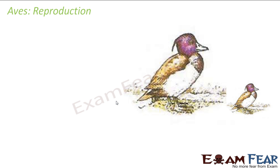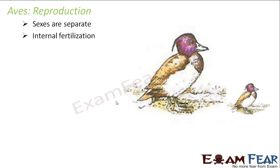Regarding reproduction in birds — sexes are separate, and internal fertilization takes place, meaning fusion occurs inside the body. They are oviparous — they lay eggs. Development is direct, meaning from the eggs a bird is formed directly, with no intermediate or larval stage involved.